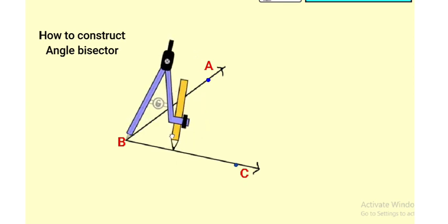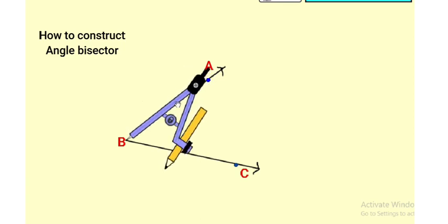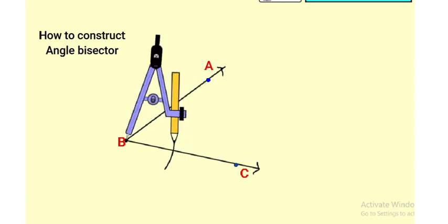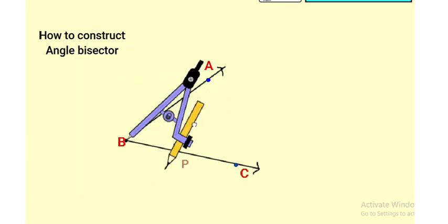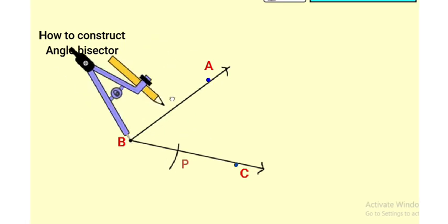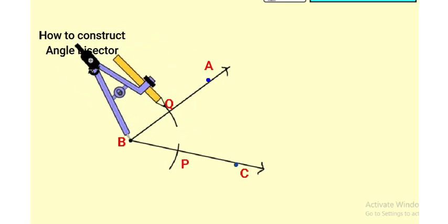To bisect this angle, take some distance between the two arms of the compass. Draw an arc on ray BC through point B, then draw an arc on ray BA through point B.